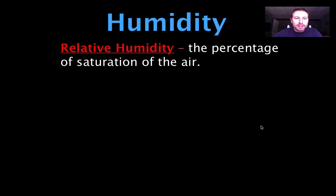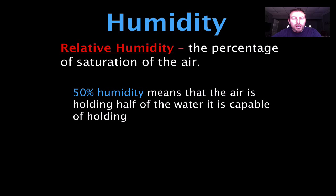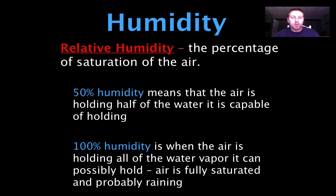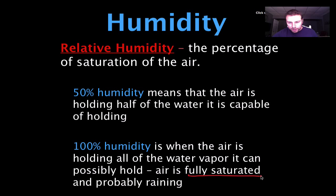More commonly, we look at relative humidity. Relative humidity is the percentage of saturation of the air. For example, 50% humidity means the air is holding half of the water it is capable of holding. 100% humidity is when the air is holding all the water vapor it can possibly hold — the air is fully saturated. Remember: 100% relative humidity means the air is fully saturated. Try to stick that to memory; it's not going to show up in your reference table.